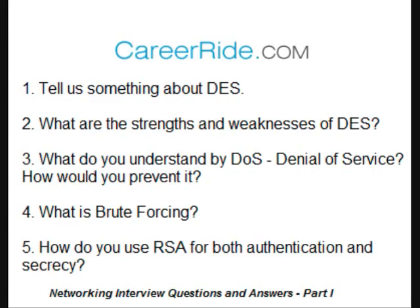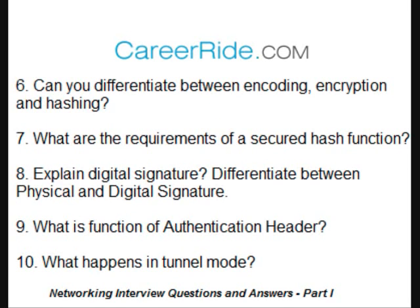How do you use RSA for both authentication and secrecy? RSA is a public key encryption algorithm working on the mathematical concept that it is easy to find and multiply large prime numbers together, but it is extremely difficult to factor their product. For authentication, one can encrypt the hash of the data with a private key — this is known as a digital signature. For secrecy, data is encrypted with the public key and decrypted with the private key.